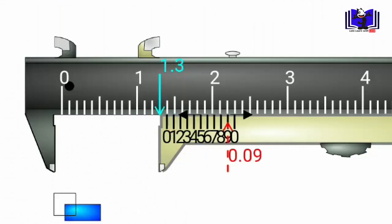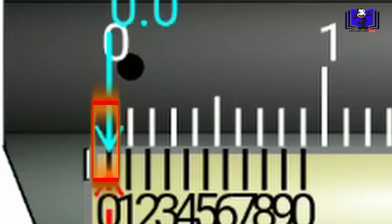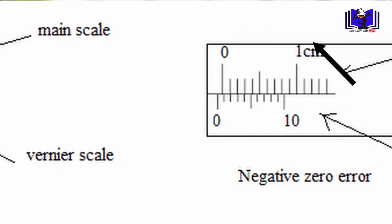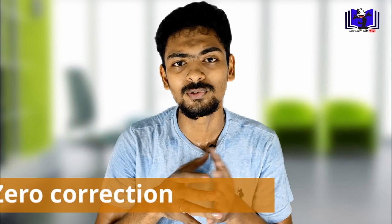When you close the jaws, the main scale and the Vernier scale should both read zero. If the Vernier scale zero does not align with the main scale zero, there is a zero error and we are not accurate. We need to correct for this zero error. Normally, this Vernier caliper will not be available at home or in school during quarantine time.